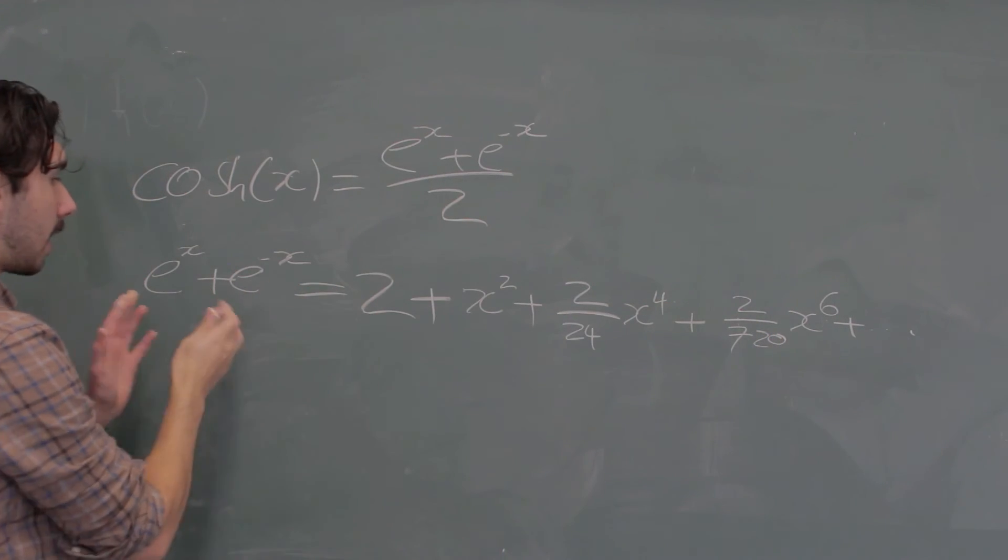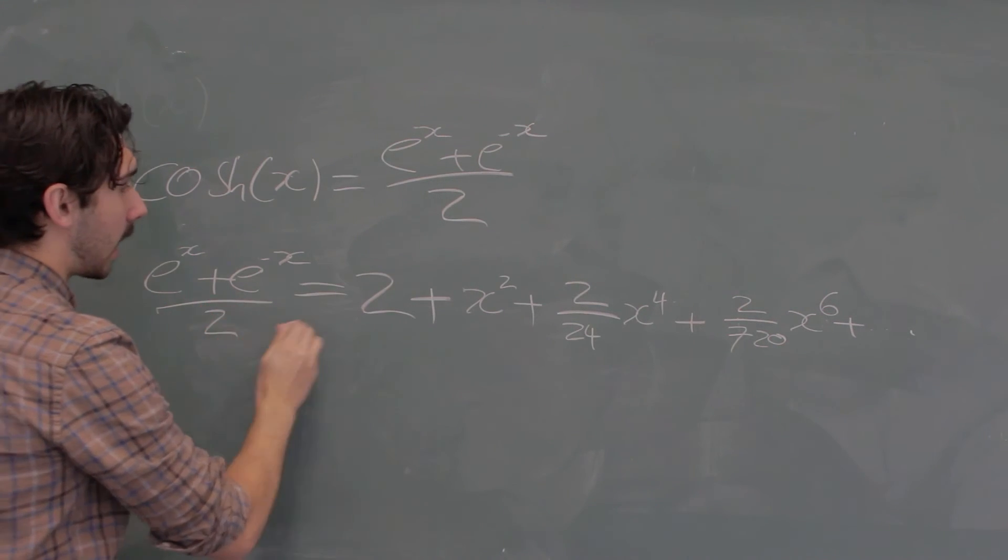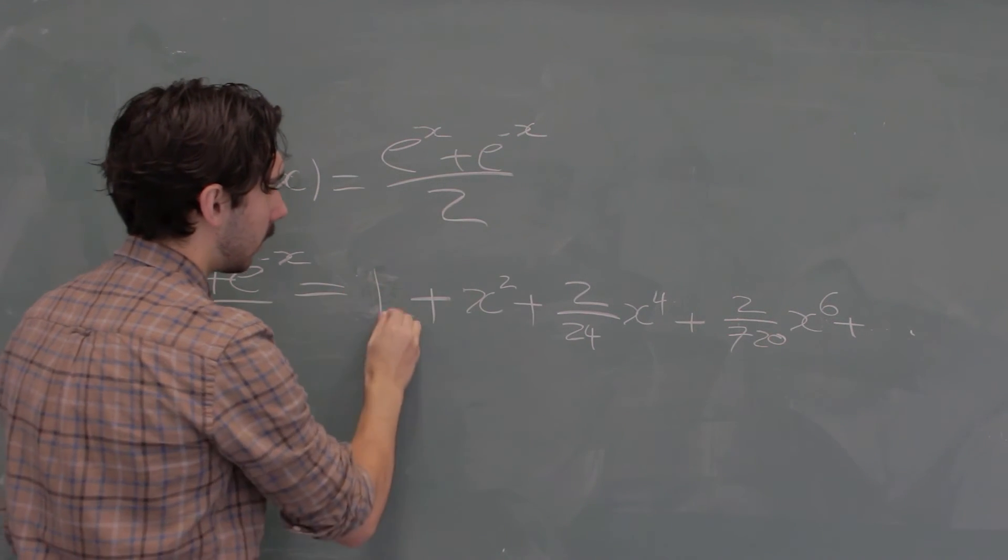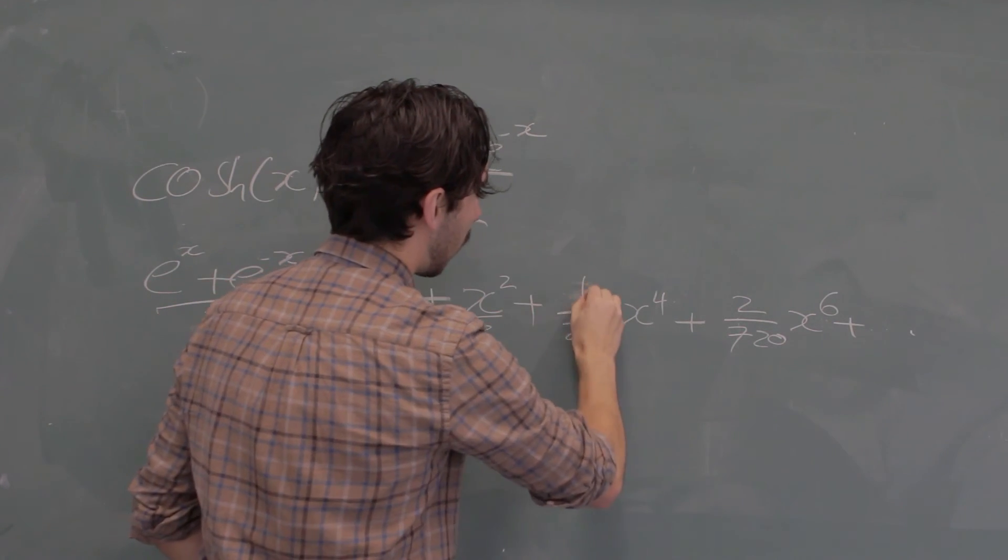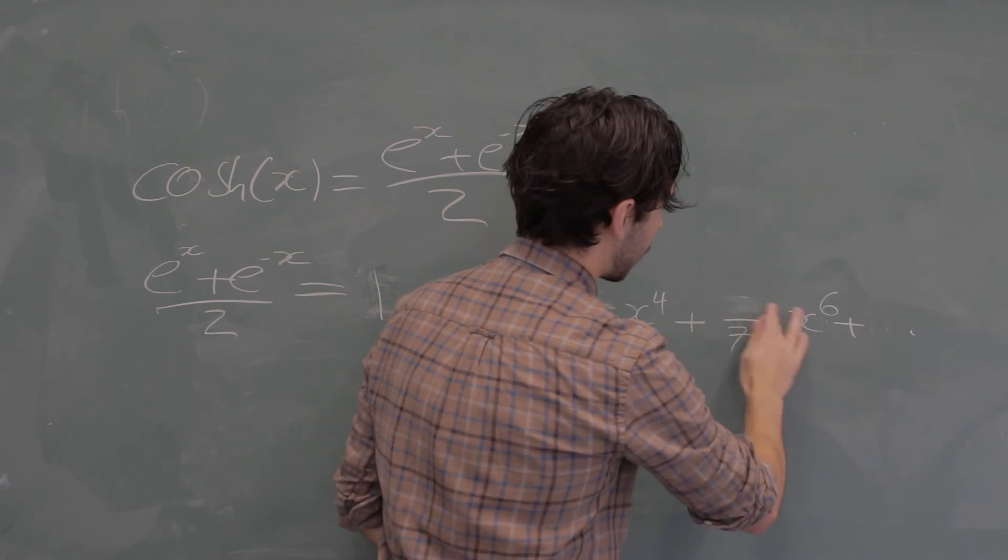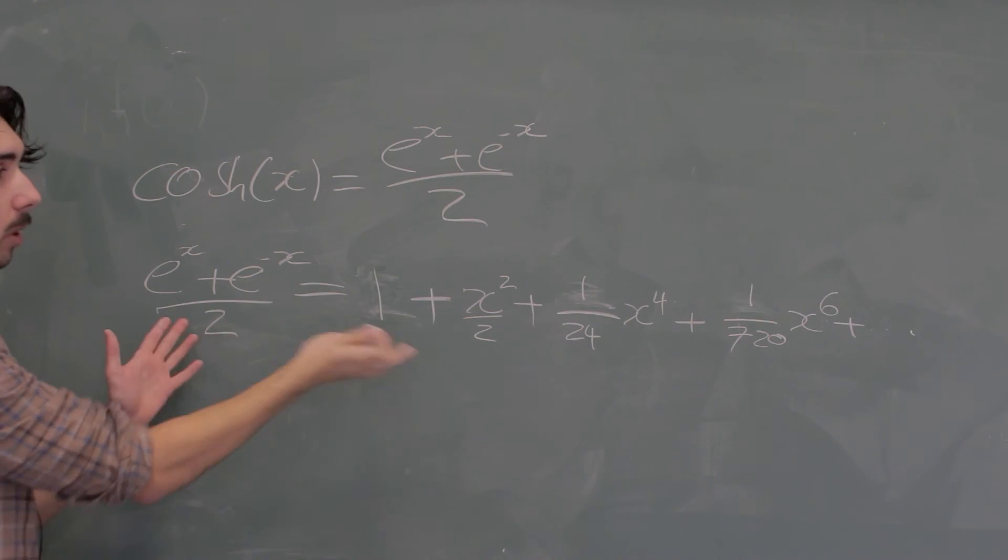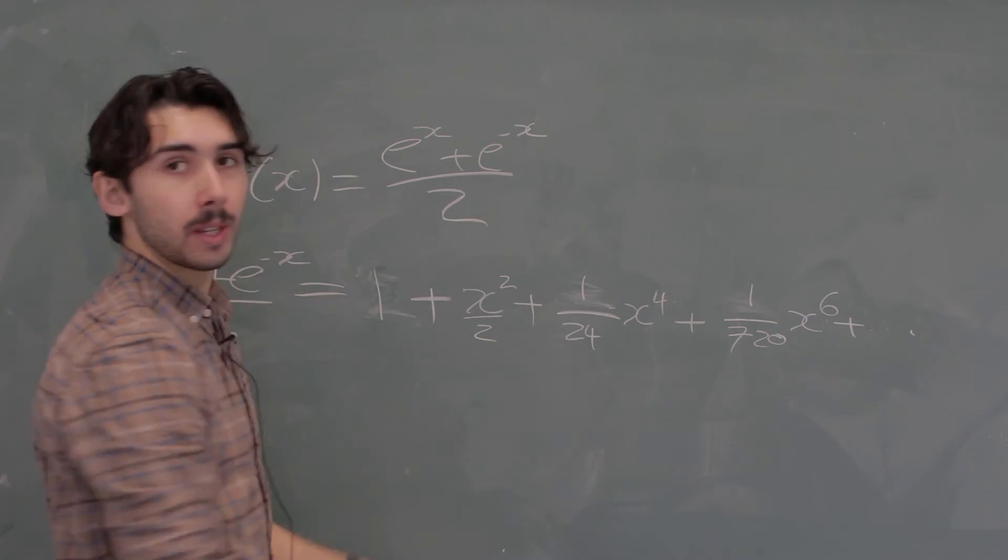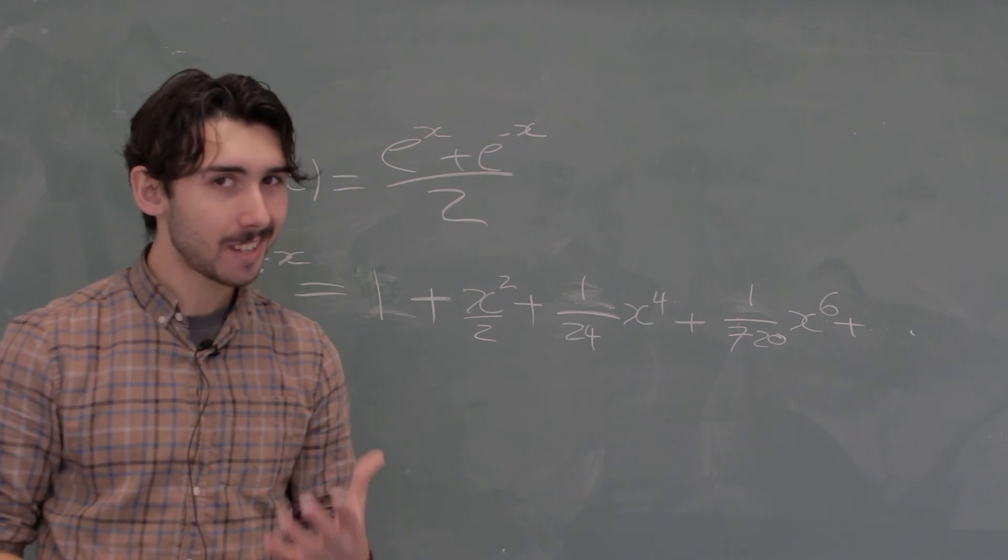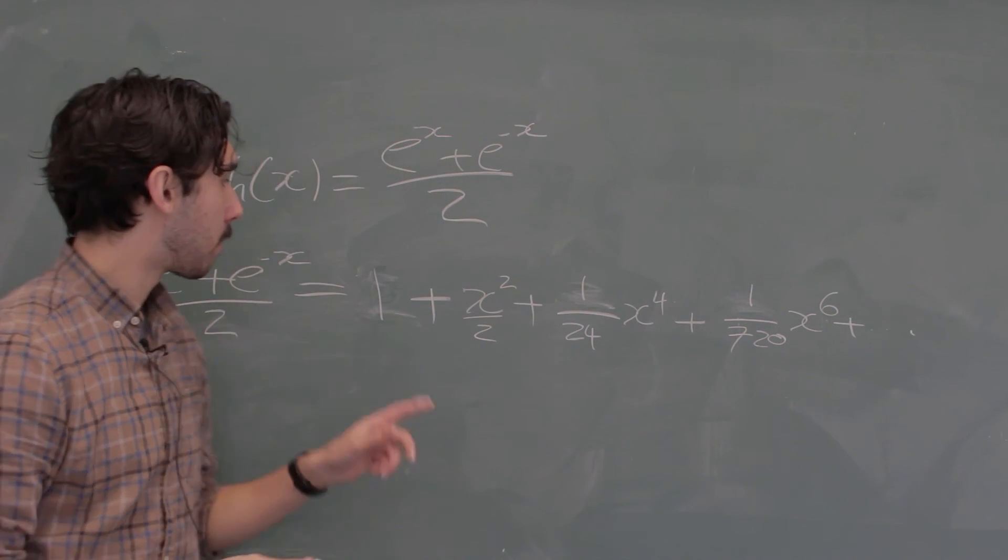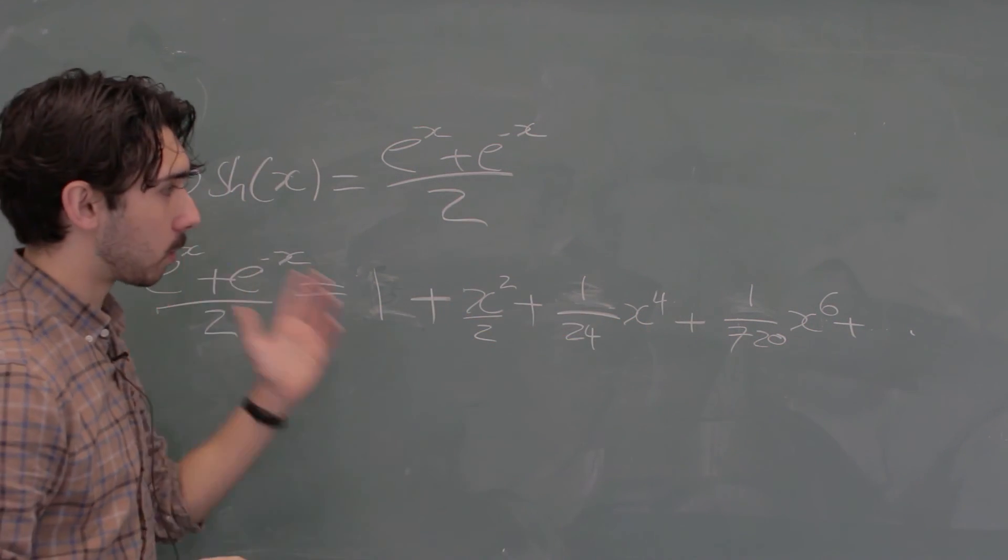And again, because cosh is actually all of this over 2, we need to half this, and so this 2 becomes a 1, this x squared becomes a half x squared, this 2 over 24 becomes a 1 over 24, this 2 over 720 becomes a 1 over 720, etc. And this then is the Maclaurin Series for cosh, and that's very nice as well. As you can see, once again, it's the exact same as cos, but again, if it was cos, that would be a minus, plus, that would be a minus, etc., but it's all pluses.